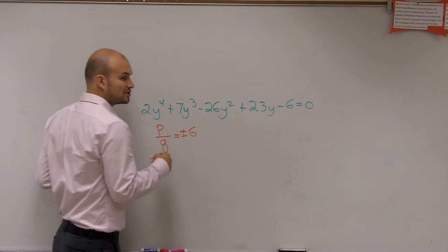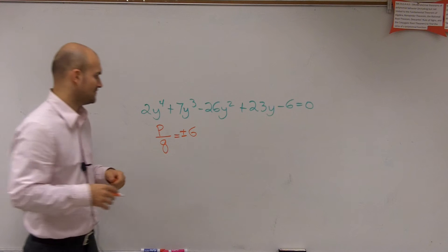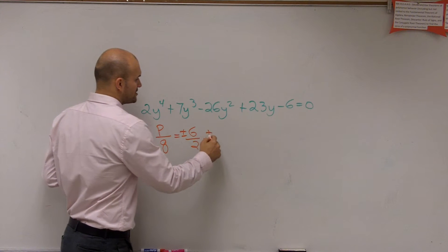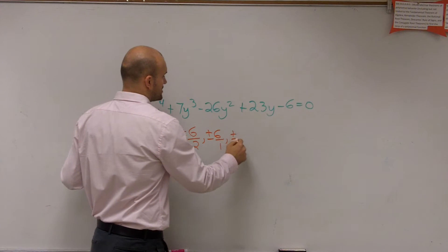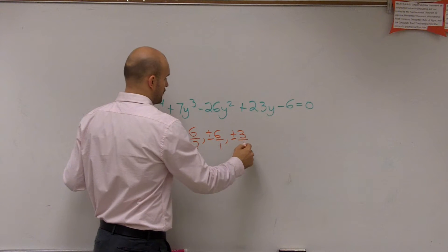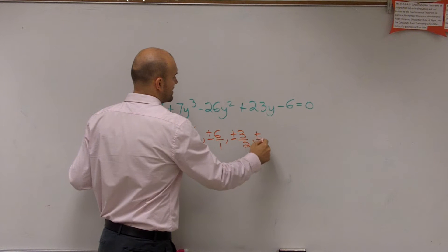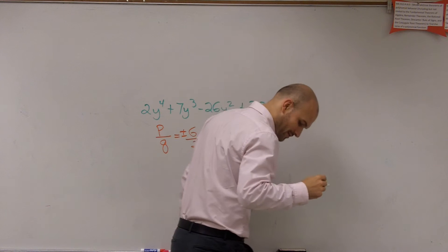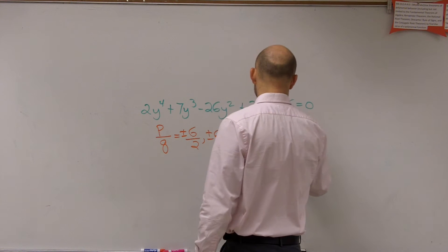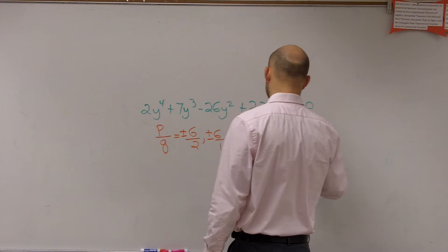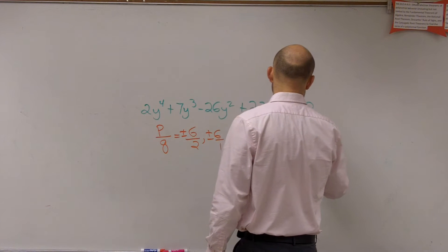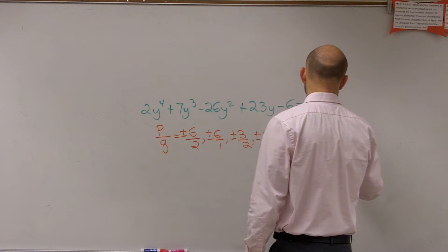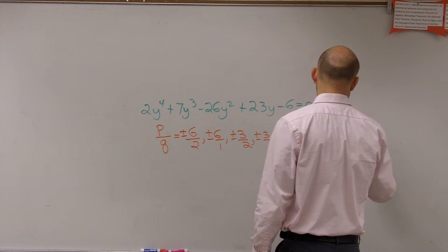So here's what we do. Plus or minus 6, I'm going to show you the long way first, and then you can start abbreviating if you'd like to. So plus or minus 6 over 2, plus or minus 6 over 1, plus or minus 3 over 2, plus or minus 3 over 1. Plus or minus 2 over 2, plus or minus 2 over 1, plus or minus 1 over 2, plus or minus 1 over 1.